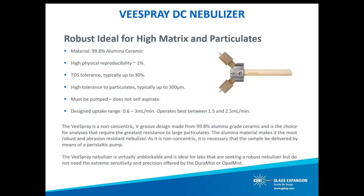The last nebulizer we'll introduce is Glass Expansion's only non-concentric design: the V-Spray. It's a v-groove design made from high-purity alumina-grade ceramic. It's a good choice for analyses requiring the greatest resistance to large particulates — it can typically pass through up to 300 micron particulates. The alumina material makes it the most robust and abrasion-resistant nebulizer. As it's non-concentric, sample must be delivered by peristaltic pump, and it operates optimally at a higher uptake rate range between 1.5 and 2.5 mils per minute. The V-Spray is virtually unblockable and ideal for labs seeking robustness without requiring the extreme sensitivity of the Duramis or Opal Mist.